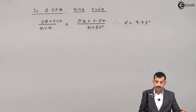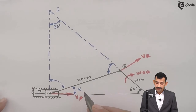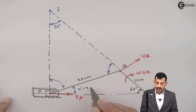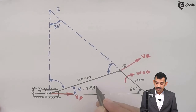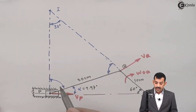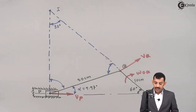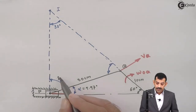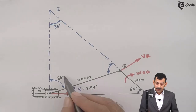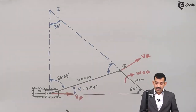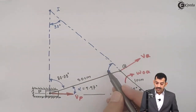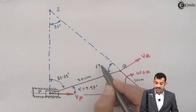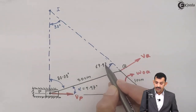Once we get angle alpha = 9.97 degrees, we find the other angles. Referring back to the main figure, this angle is 9.97 degrees, so the next angle is 90 minus 9.97, which comes out to approximately 80.03 degrees. That means the third angle in triangle IPQ is 180 minus 80.03 minus 30, giving approximately 69.97 degrees.